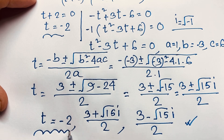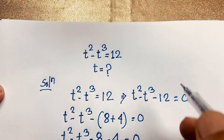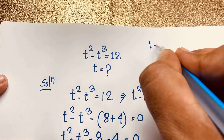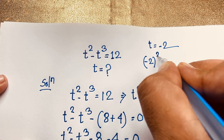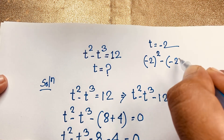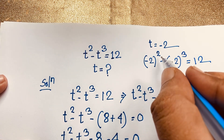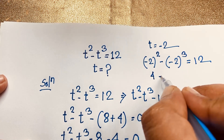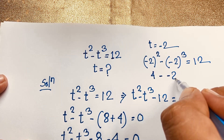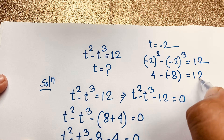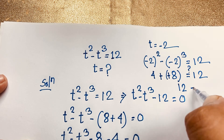Let's verify. We will verify the solution t is equal to minus 2. Our equation is t squared minus t cubed equals 12. Substituting t equals minus 2: minus 2 to the power 2 minus minus 2 to the power 3 is equal to 12. Minus 2 to an even power is always positive, so this is 4. Minus 2 to the power 3 is negative 8. So: 4 minus negative 8 equals 4 plus 8 equals 12.